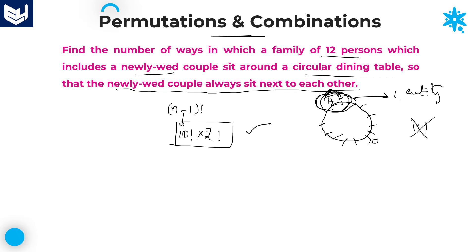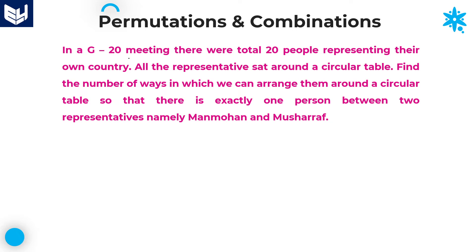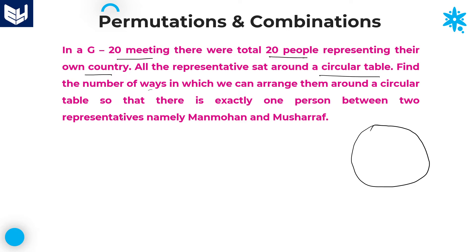Let's look at the next question. In a G20 meeting, there were 20 people representing their own country. All the representatives sat around a circular table. If there is no condition and you want to arrange 20 people in a circle, the required number of ways is (20 minus 1) factorial, that is 19 factorial. This is the answer without any condition, but here a condition is given, so your answer is not 19 factorial.